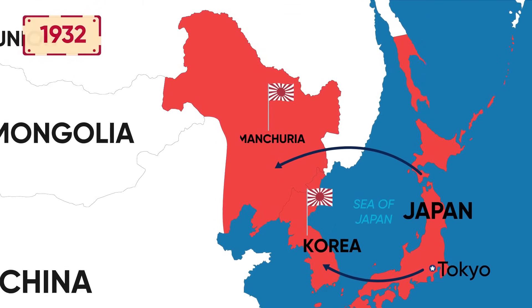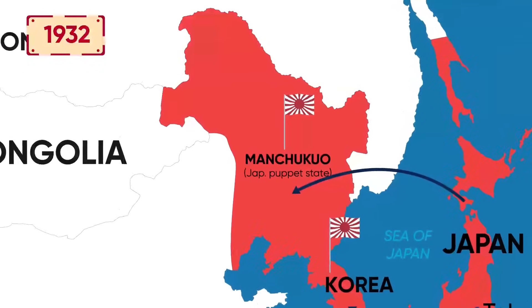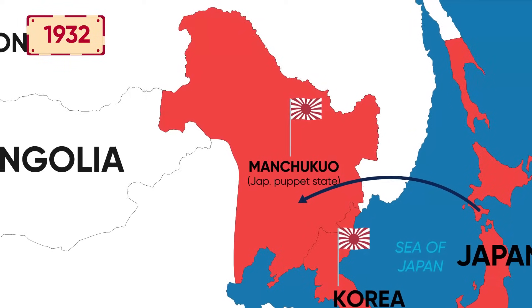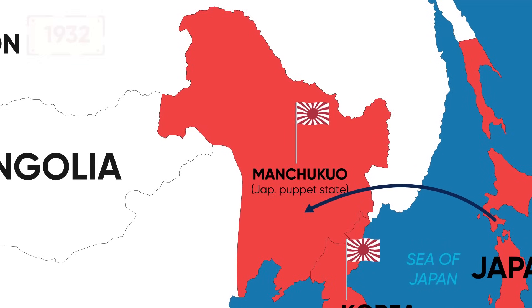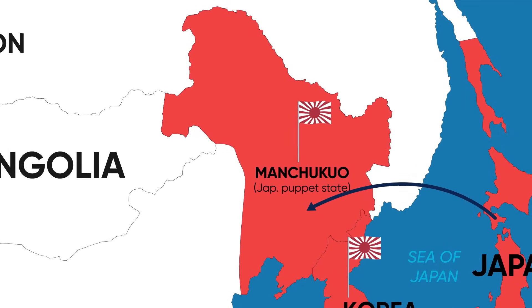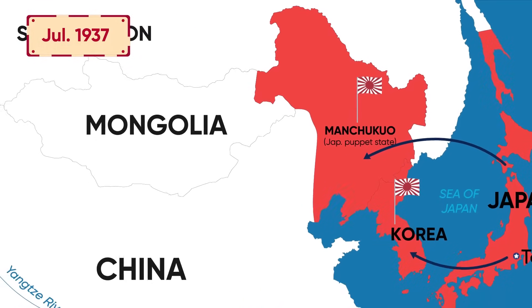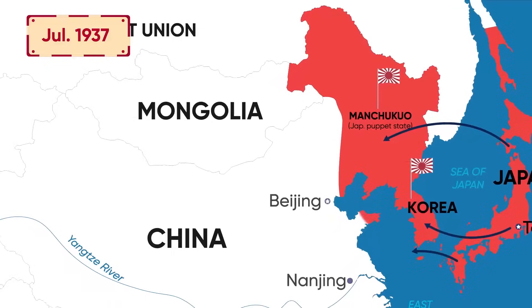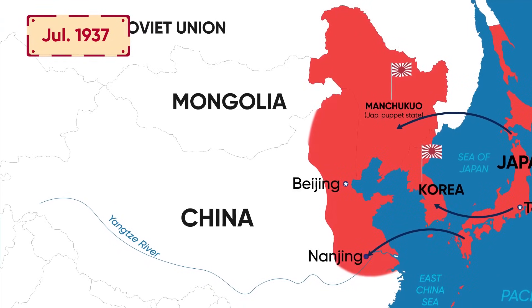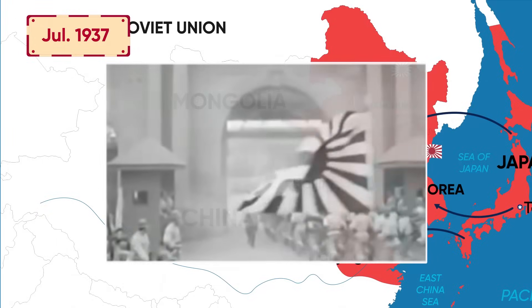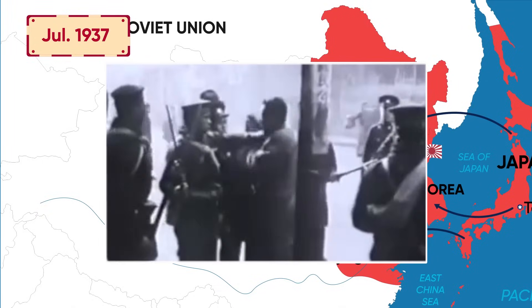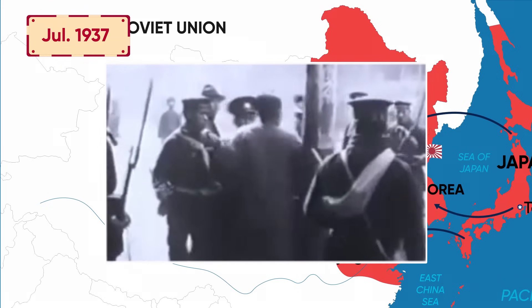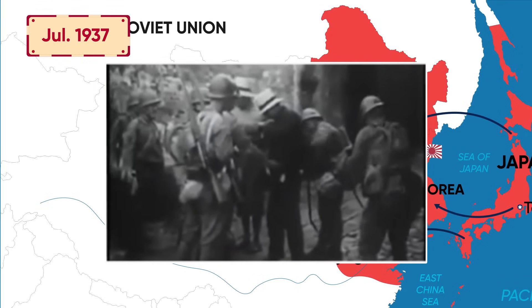In the following year, a puppet state called Manchukuo was established by the Japanese, cementing their hold on the region. In 1937, Japan declared war on China, resulting in the bloody Nanking Massacre, in which hundreds of thousands of people in the Chinese city of Nanking, including both soldiers and civilians, were brutally murdered.